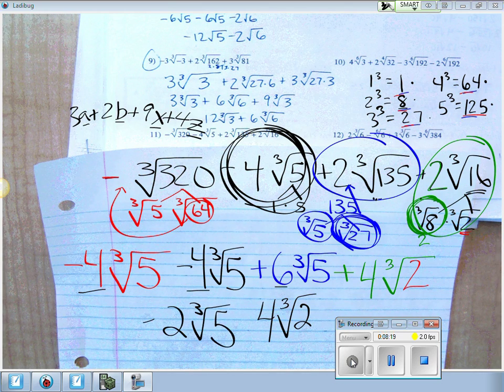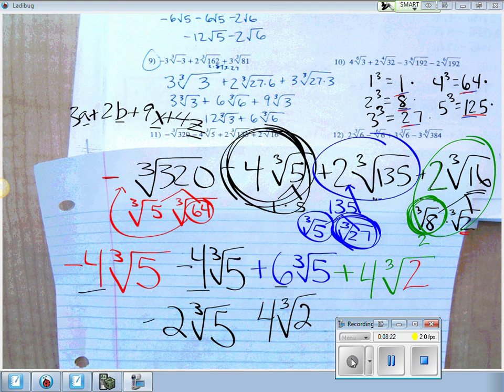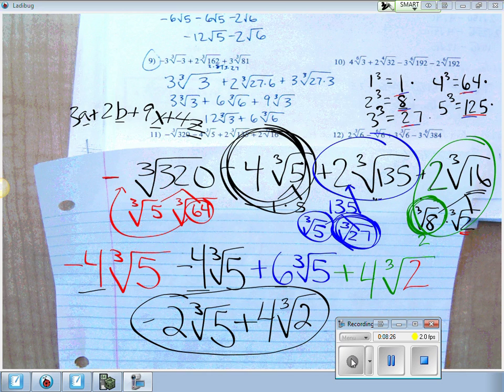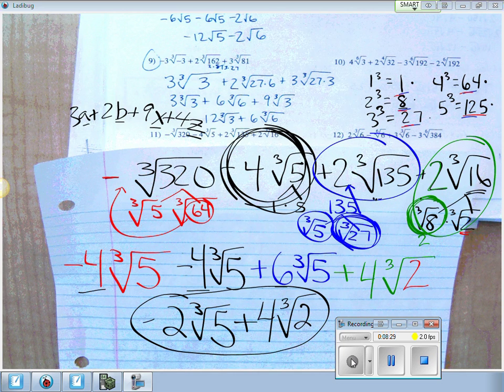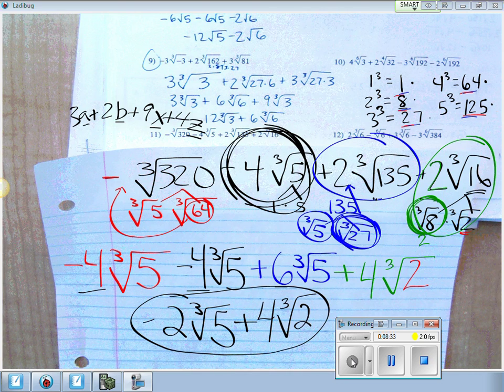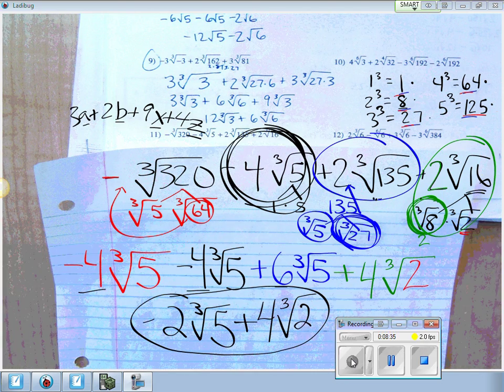And you're done. That simplifies to negative 2 cube root 5 plus 4 cube root of 2. That's about as far as you can go. You're done.